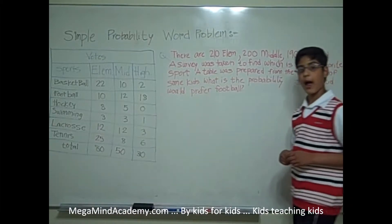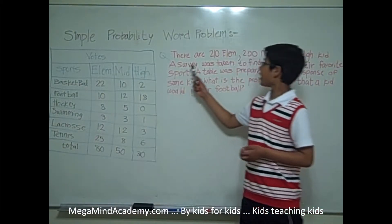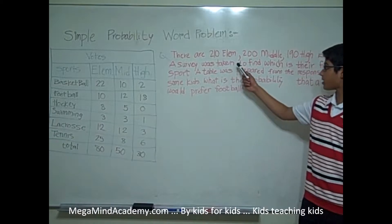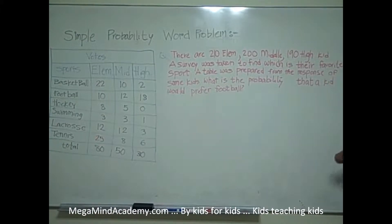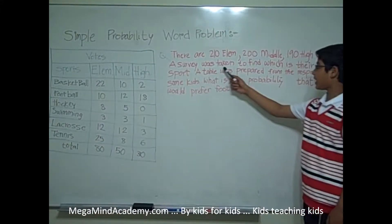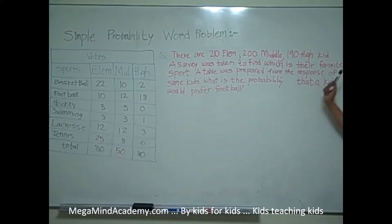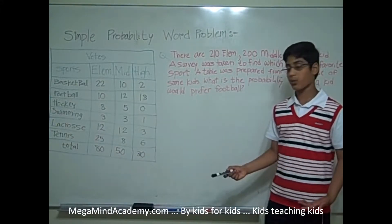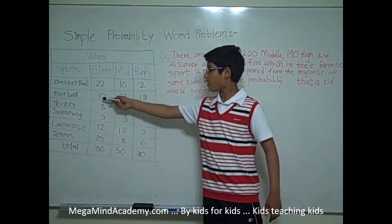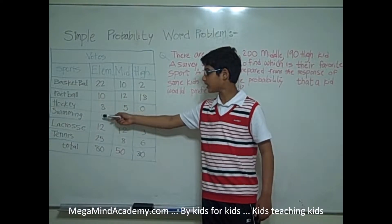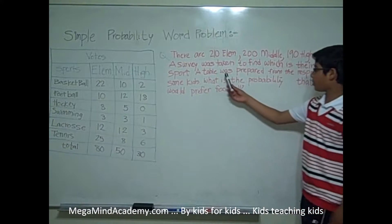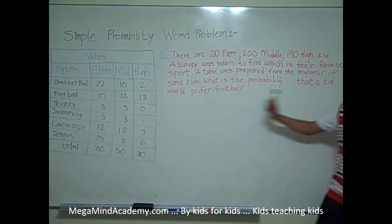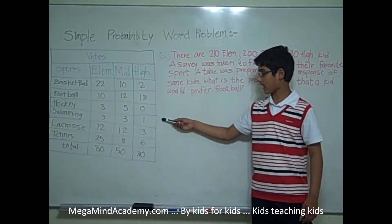Let's say we have a problem: there are 210 elementary kids, 200 middle school kids, and 190 high school kids. A survey was taken to find out which is their favorite sport. The sports were basketball, football, hockey, swimming, lacrosse, and tennis. A table was prepared from the response of some kids.